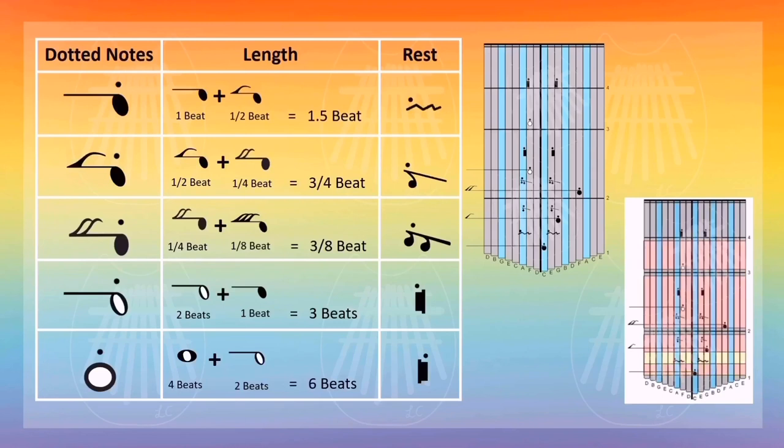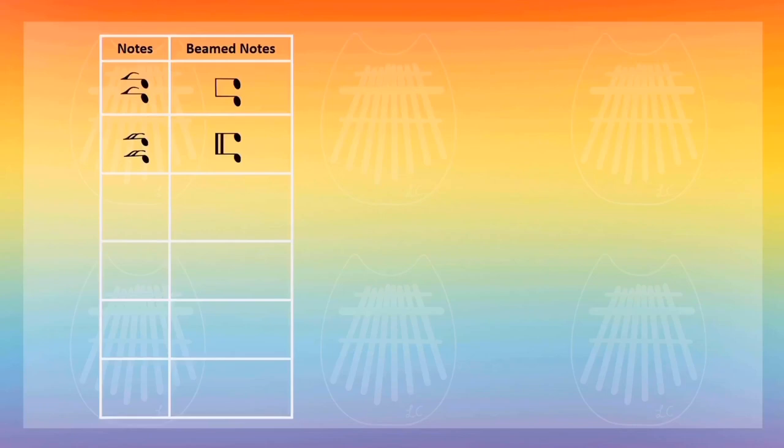This is what dotted notes look like in kalimba tabs. Next, let's talk about beaming notes. Beaming notes helps us read the music easier. Usually they are used for notes smaller than a quarter note, such as eighth notes and sixteenth notes. For two eighth notes, to beam them you would get rid of the tail and connect them with one line. For two sixteenth notes, because there are two tails, you would connect them with two lines.